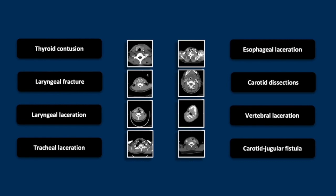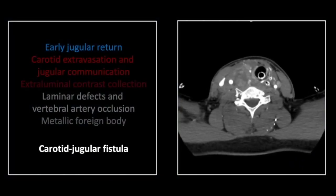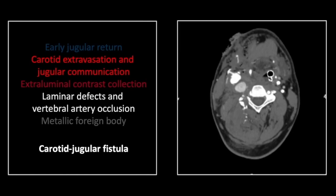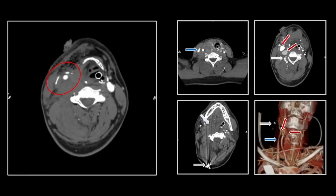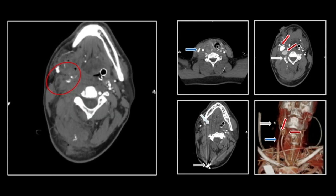Our last case is a carotid artery jugular venous fistula resulting from a gunshot wound. There is early jugular venous return. Compare that to the opposite side — it is a sure indicator that there is an arteriovenous fistula present. You can see that fistula where there is a communication between a carotid pseudoaneurysm and the adjacent jugular vein. There is an adjacent lobe making this actually a bilobed pseudoaneurysm. There is the communication between the carotid and the jugular.